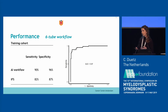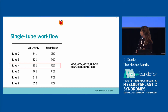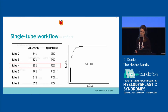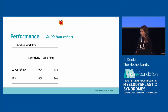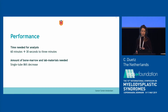We also tested a single-tube approach for practical lab advantages. Tube four, our erythroid tube, performed best solo with 85% sensitivity and 95% specificity in the training cohort and an AUC of 0.96. In the validation cohort, accuracy was preserved: 90% sensitivity and 93% specificity for the six-tube workflow, and 97% sensitivity and 95% specificity for the single-tube workflow. Analysis time decreased from 60 minutes to 30 seconds to 3 minutes, and using the single-tube workflow reduced the amount of bone marrow lab material needed by 86%.